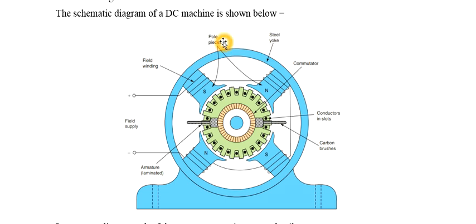The pole contains a pole core as well as pole shoes. The pole shoes support the field windings, and field windings are placed on the poles with a DC power supply, since it is a DC machine. Along with the field windings, we have armature windings which are placed in the armature slots.